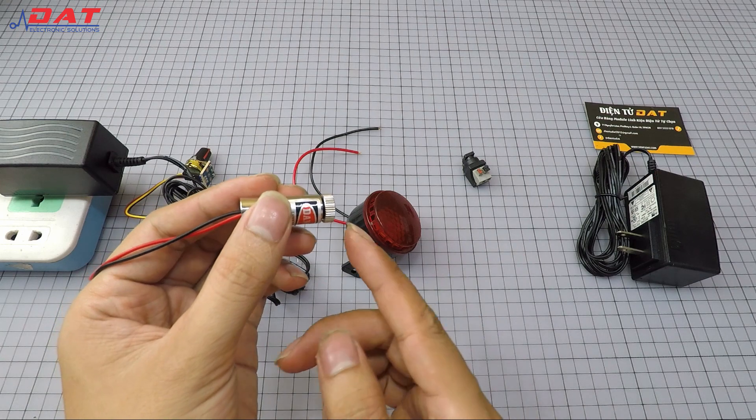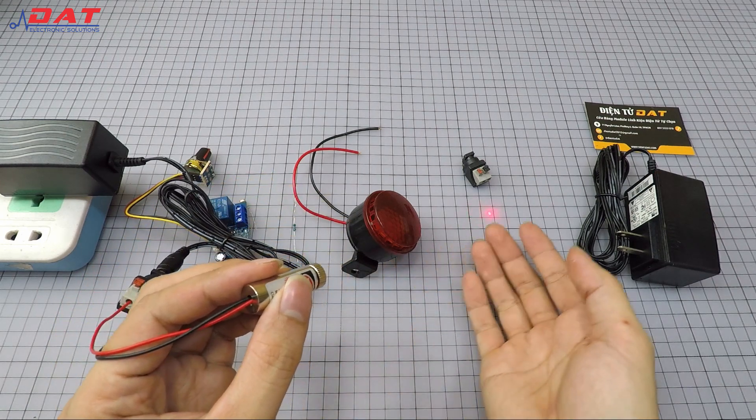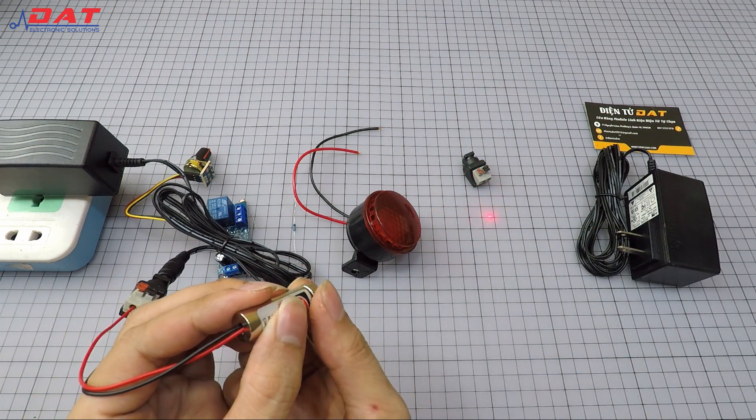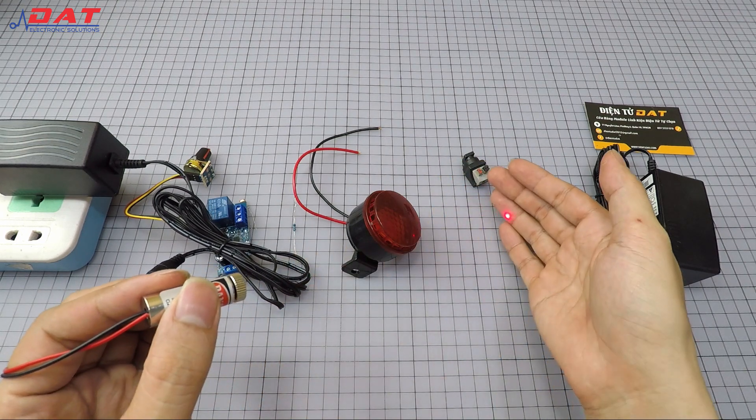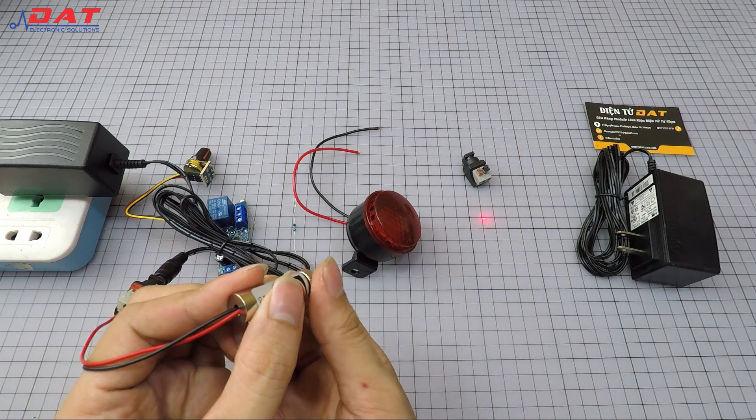On the laser head there's a knob to adjust the focal point and convergence point of the laser beam. Depending on how far we place the receiver, we'll adjust this focus accordingly.